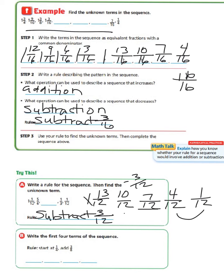Now it says to write the first four terms of the sequence, starting at 1/4 and adding 3/8. First, we convert 1/4 to an equivalent fraction with a denominator of 8. We multiply 4 times 2 to get 8, and 1 times 2 gives us 2/8. Now we have 2/8 and add 3/8, giving us 5/8. Adding 3/8 to that gives us 8/8, which equals 1. And adding 3/8 to 1 gives us 1 and 3/8.